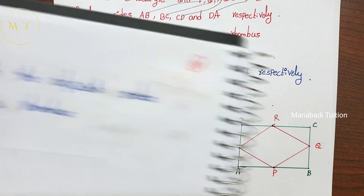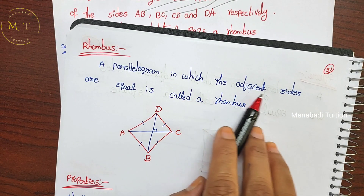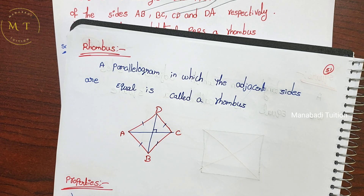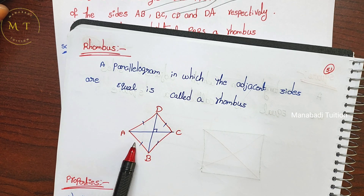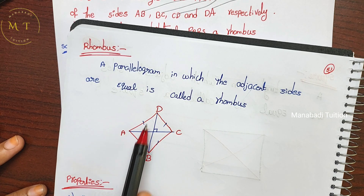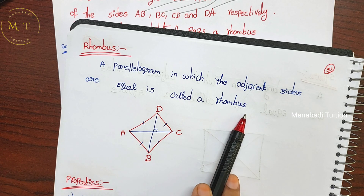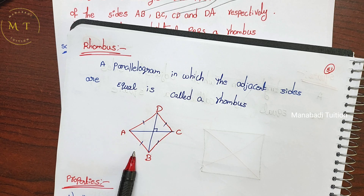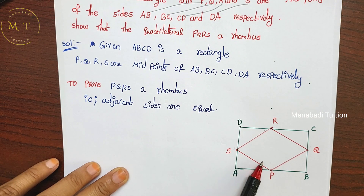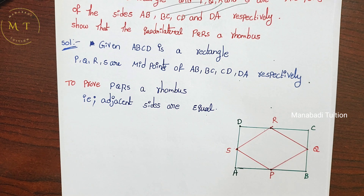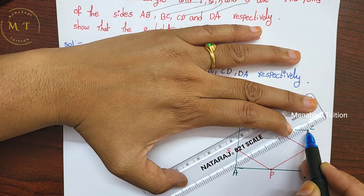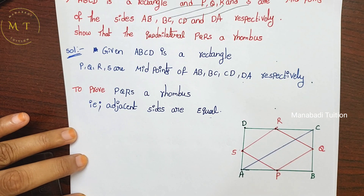First, the rhombus definition: a parallelogram in which the adjacent sides are equal is called a rhombus. So we need to show adjacent sides are equal, meaning AB equal to AD. Here the adjacent sides are equal. We can use the midpoint theorem — join diagonal AC.